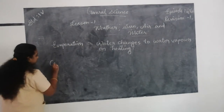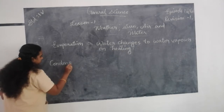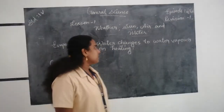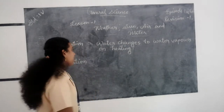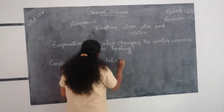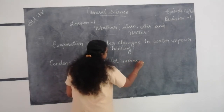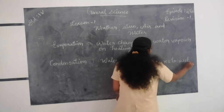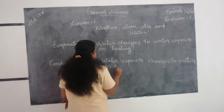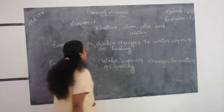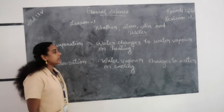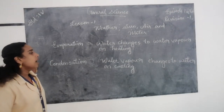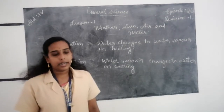Condensation is a process by which water vapor changes to water on cooling. Water changes to water vapor on heating is called evaporation, and water vapor changes to water on cooling is called condensation.